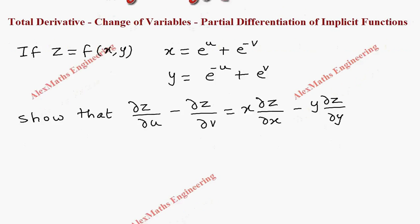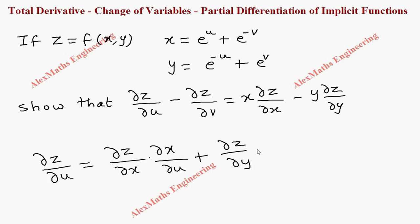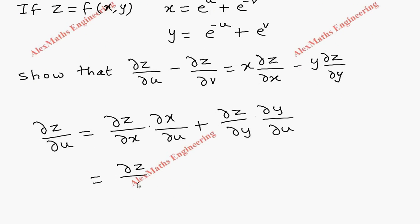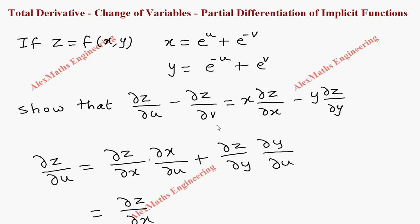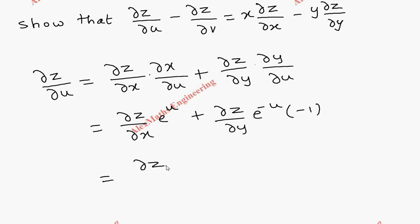So let's find the first part which is dou z by dou u. This can be written as dou z by dou x into dou x by dou u, plus dou z by dou y into dou y by dou u. Now dou z by dou x will keep as it is, and the partial differentiation of x with respect to u gives e power u only, because v is constant. So we get dou z by dou x into e power u, minus dou z by dou y into e power minus u.